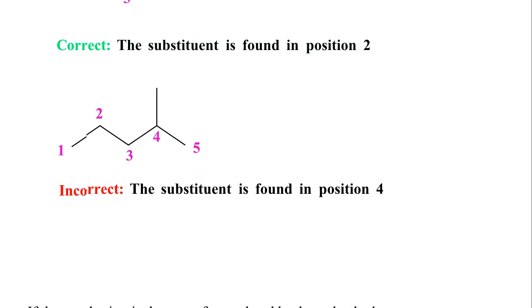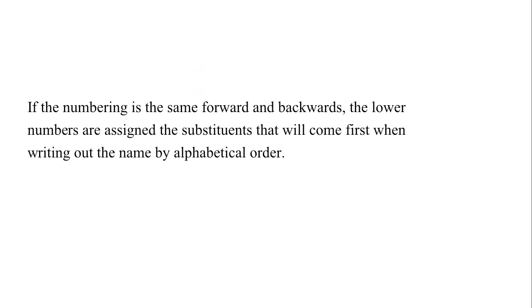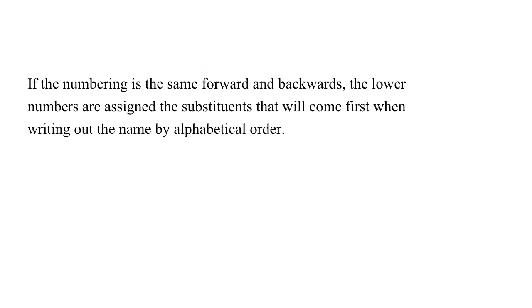All right, and just a note here, if the numbering is the same going forwards and backwards, then the lower number will be assigned to the substituent that will come first when writing out the name by alphabetical order. So spoilers, rule three we're going to be discussing that we list the substituents by alphabetical order.